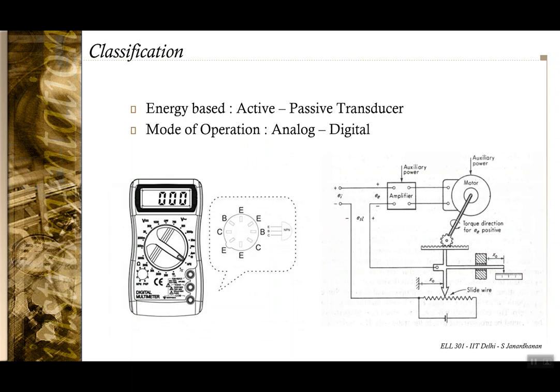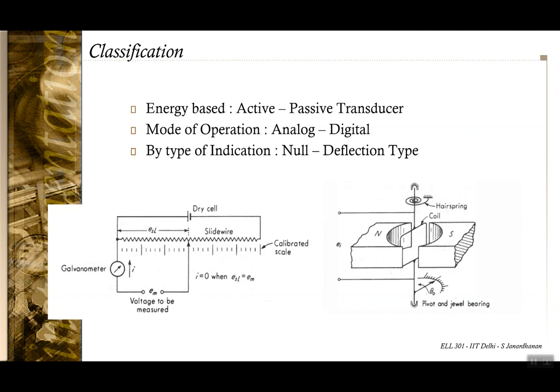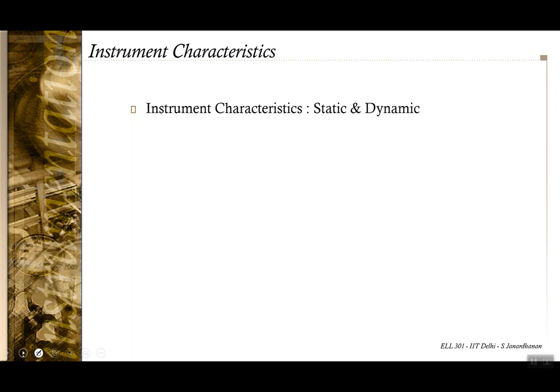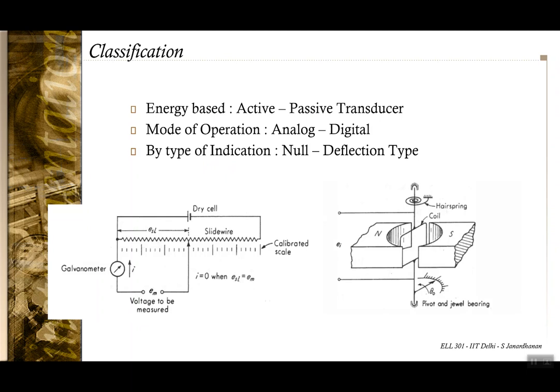Based on mode of operation, you can have analog or digital instruments. You can also have a null-deflection based or a deflection-based instrument. On all these characteristics, you can classify instruments. In addition, you have to judge how good or bad a particular instrument is — that leads to instrument characteristics.